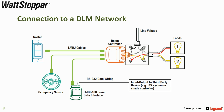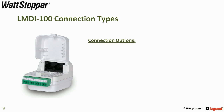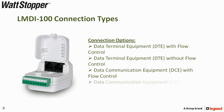The LMDI100 is connected to the DLM local network just as any other DLM device. It is connected using the in-room bus CAT5 and is tied to the third-party system via RS-232 data wiring. There are several different LMDI100 connection types available, including data terminal equipment DTE with flow control, DTE without flow control, data communication equipment DCE with flow control, and DCE without flow control.